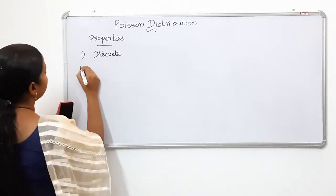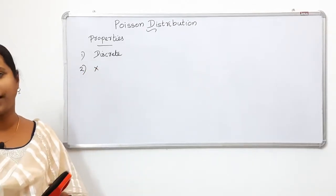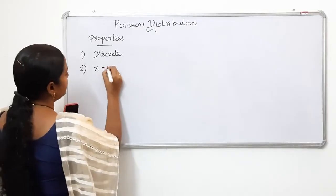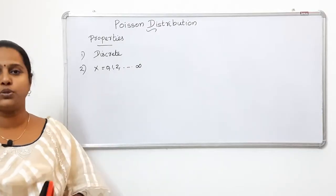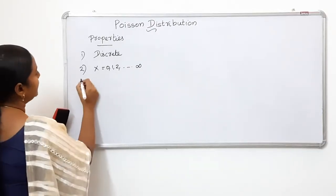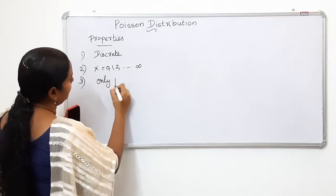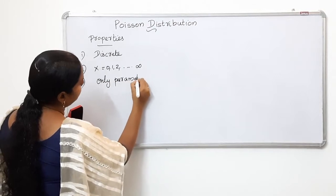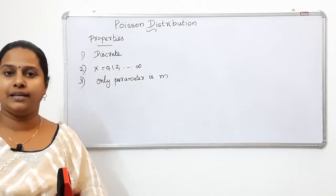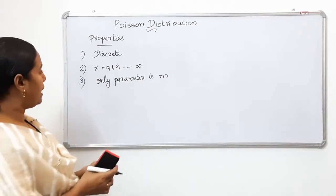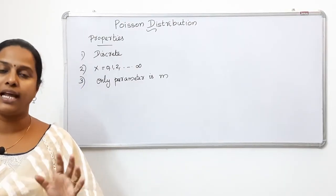That is the first property. The variable is given by x. If we define x as going to infinity, x varies from 0 to infinity. The second thing is to give it a parameter. The only parameter is m.